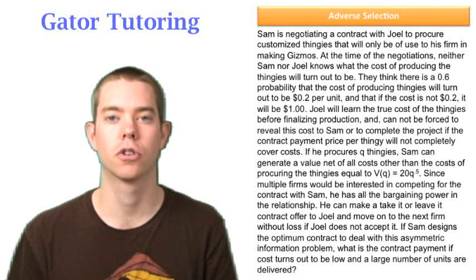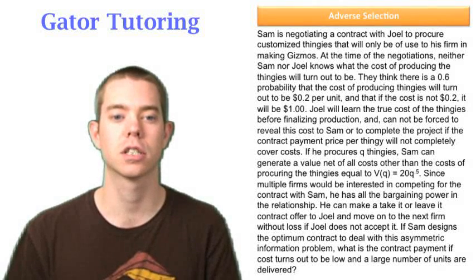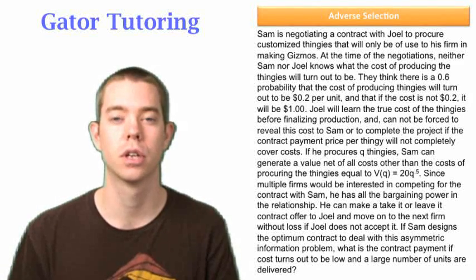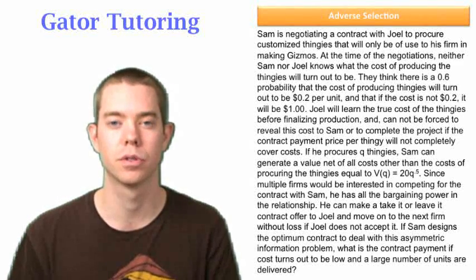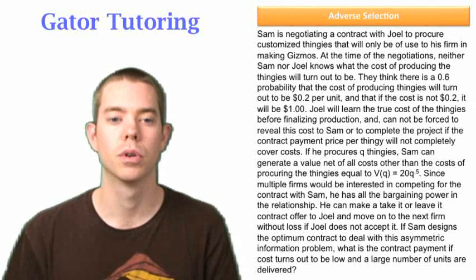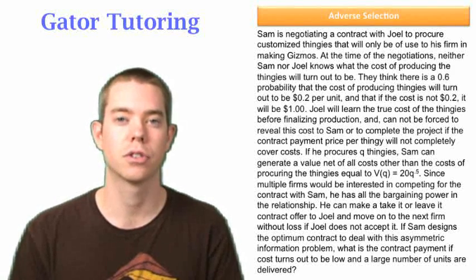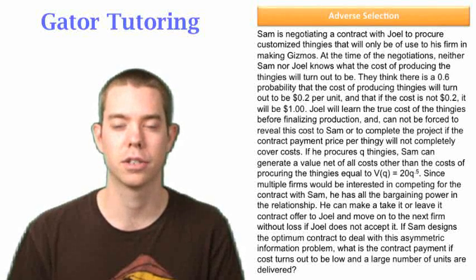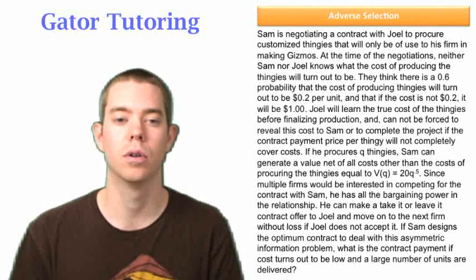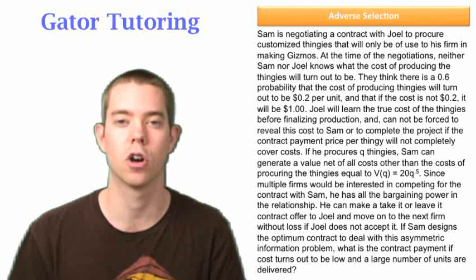It says that Sam is negotiating a contract with Joel to procure customized thingies that will only be of use to Sam's firm in making gizmos. So what's happening here is we don't know the cost, neither Sam nor Joel right now knows the cost of making these thingies. They just know it could be low, which was $0.20 per unit, or it could be high, which is $1 per unit.